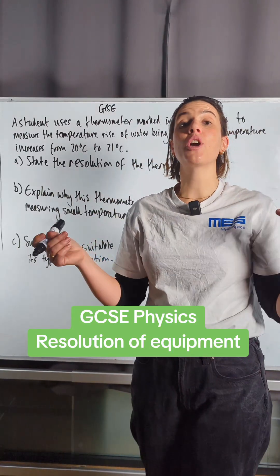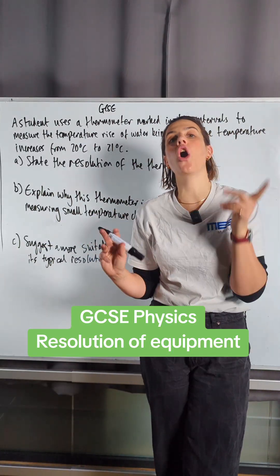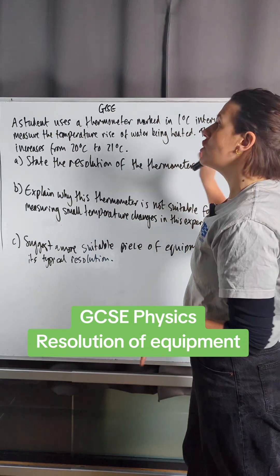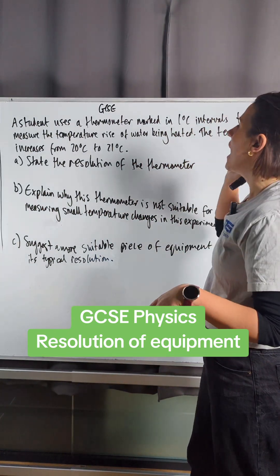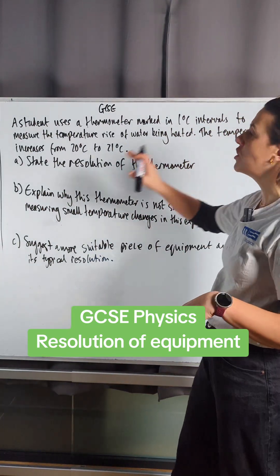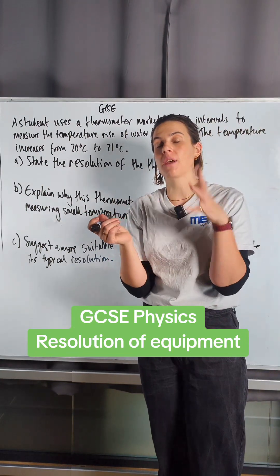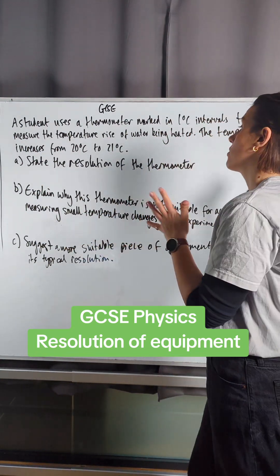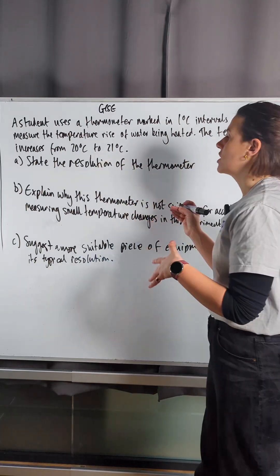Hey GCSE physicists! Today we're going to be talking about the resolution of equipment. We've got a student using a thermometer that reads to the nearest one degree, measuring an increase in temperature of water from 20 to 21 degrees Celsius. State the resolution of the thermometer.